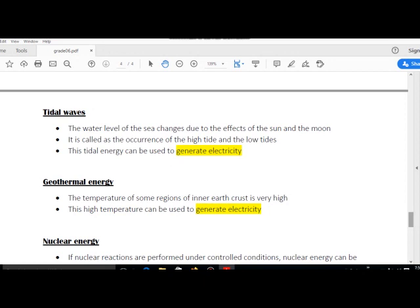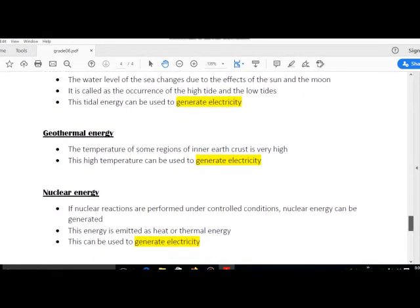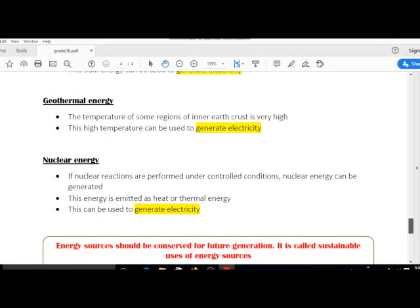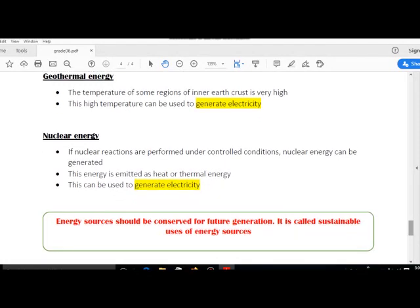Nuclear energy: If nuclear reactions are performed under controlled conditions, nuclear energy can be generated. This energy is emitted as heat or thermal energy. This can be used to generate electricity.